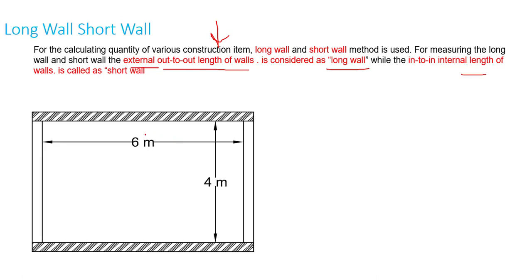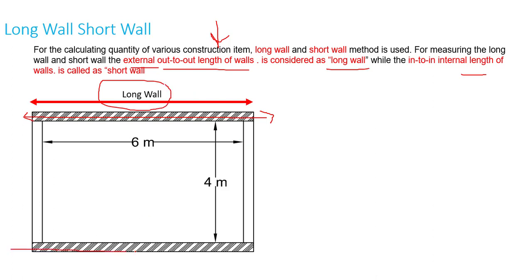Let me give you an example. Let's suppose we have a one-room plan where the internal dimension is 6 meters by 4 meters. If we measure this wall as out to out, it will be considered as the long wall. The total internal length is 6 meters, and we add the wall thickness from both sides to reach the outer extent — this is the long wall. The end-to-end internal dimension is considered the short wall.